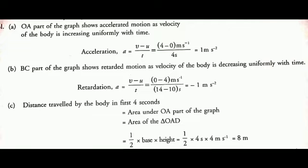For subtopic B, the BC part of the graph shows retarded motion, as the velocity of the body is decreasing uniformly with time. For its calculation, retardation A is equal to (V minus U) divided by T. Here V is 0 because at C the final velocity is 0. So it is (0 minus 4) divided by (14 minus 10) seconds, giving minus 1 meter per second squared. So retardation for part BC is −1 m/s².